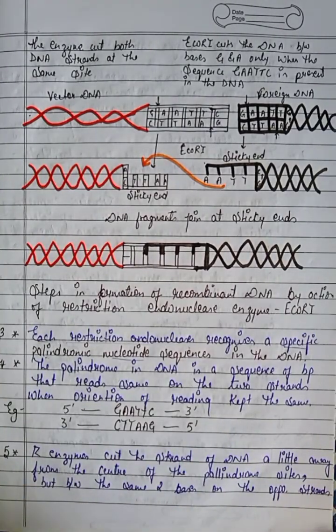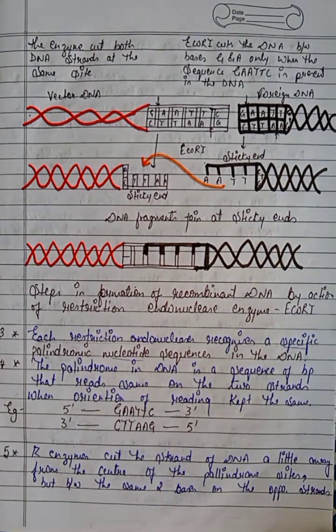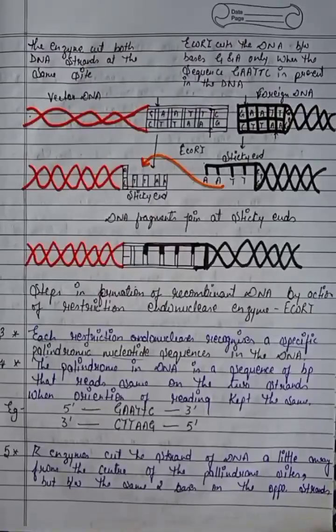The palindrome in DNA — what does it mean? The base pair sequence on the two strands of DNA reads the same. For example, the sequence GAATTC on one strand — when we write the complementary base pair sequence on the other strand, it also reads GAATTC.